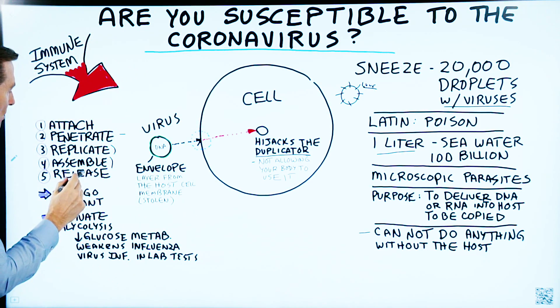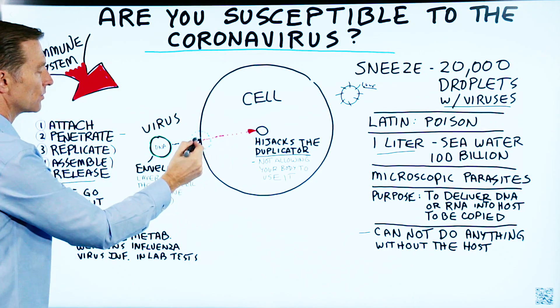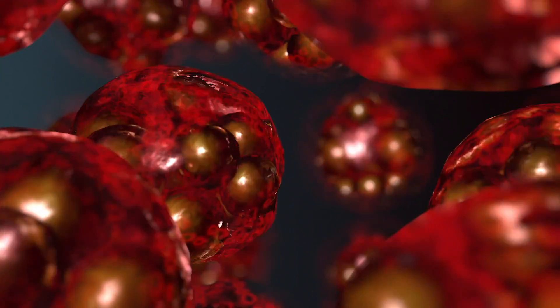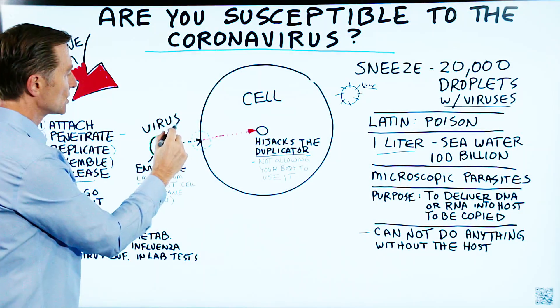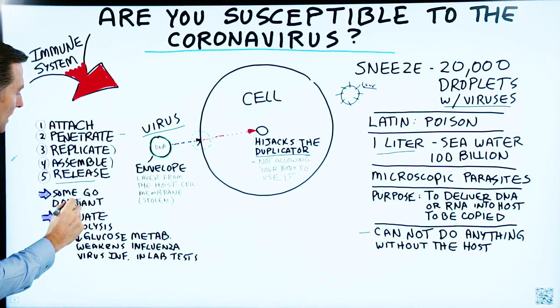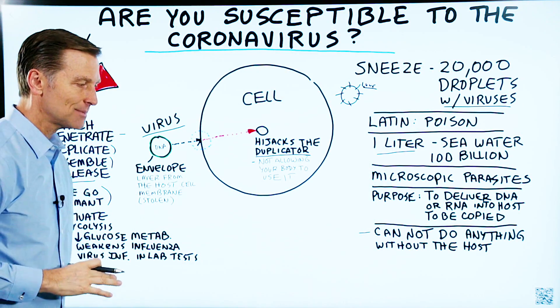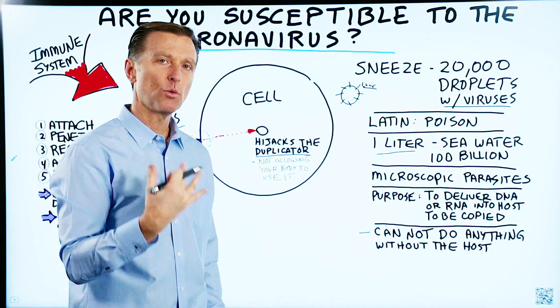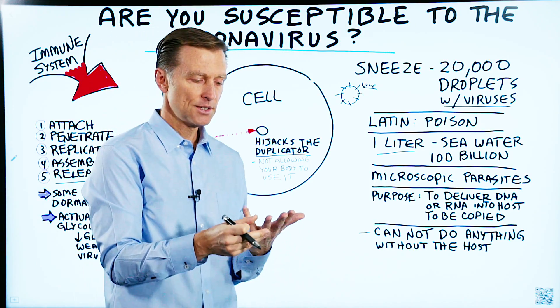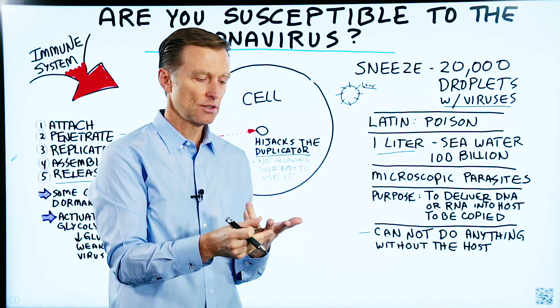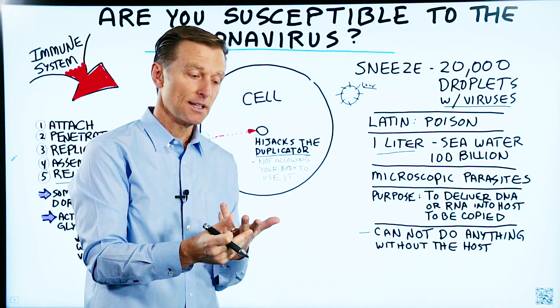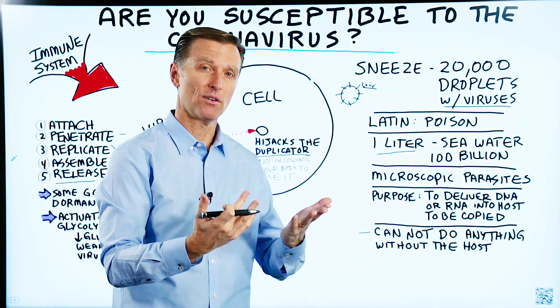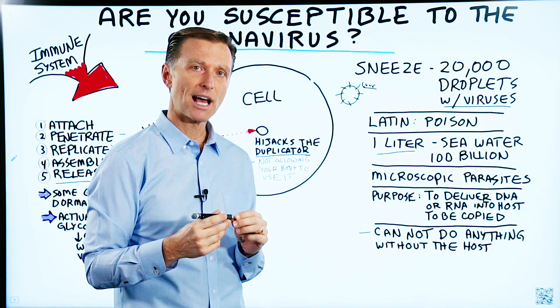Some viruses actually go dormant — that's called latent. They hang out and do nothing, waiting until you're older, weakened, nutritionally deficient, or stressed, and then they come out. This is why so many people get virus outbreaks during stress states, because these viruses are dormant and waiting.